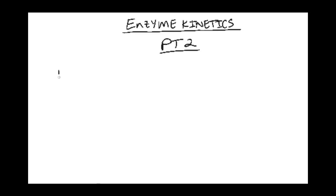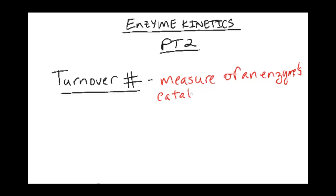So the first we're going to look at is called the turnover number. And the turnover number is literally, as the name implies, how many products does the enzyme turnover, or it's a measure of an enzyme's catalytic activity. The symbol for turnover number is k-cat, and that's going to be k2.